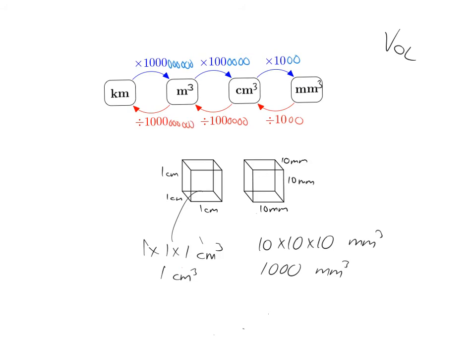For example, if something is 25,319 centimeters cubed and we want to know how many meters cubed it is — to go from centimeters cubed to meters cubed, we divide by a hundred times a hundred times a hundred, giving us 0.025319 meters cubed.